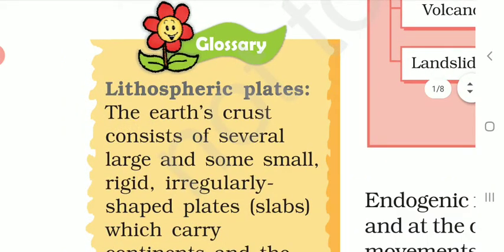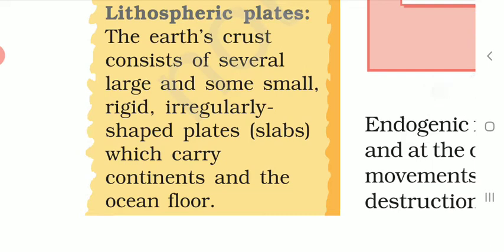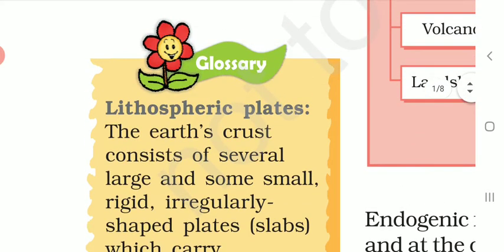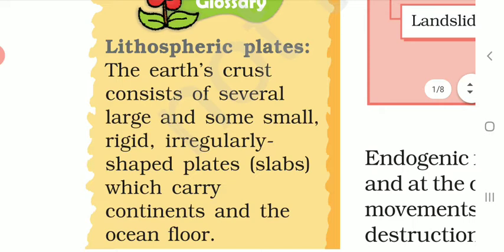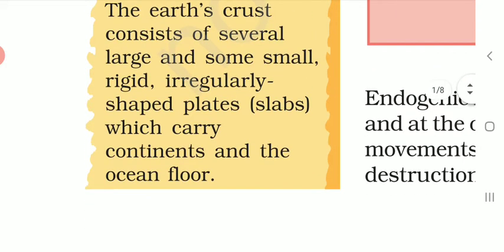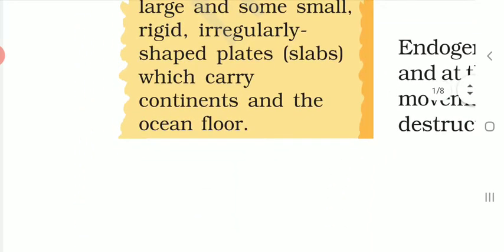In the glossary, lithospheric plates are defined as: the earth's crust consists of several large and some small, rigid, irregularly shaped plates — called slabs — which carry continents and the ocean floors. Some lithospheric plates are on the surface of the earth and some are inside the ocean floor.